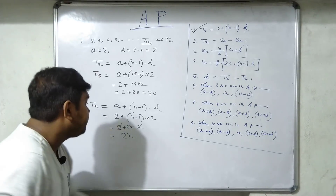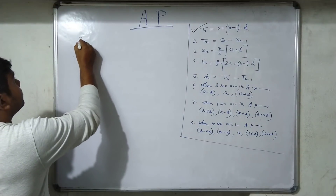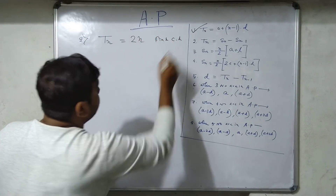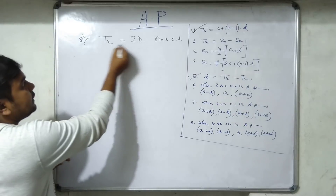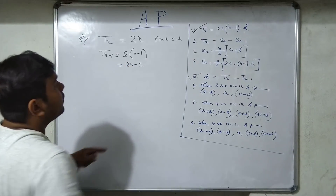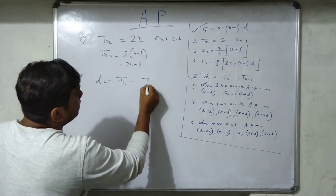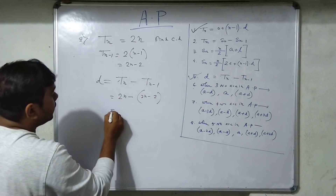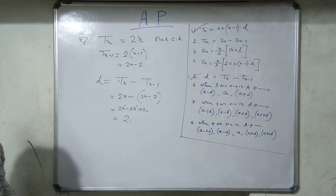We can verify by checking the common difference: D = Tₙ minus Tₙ₋₁. Since Tₙ = 2N, then Tₙ₋₁ = 2(N-1) = 2N - 2. So D = 2N - (2N - 2) = 2, which confirms the common difference is 2.